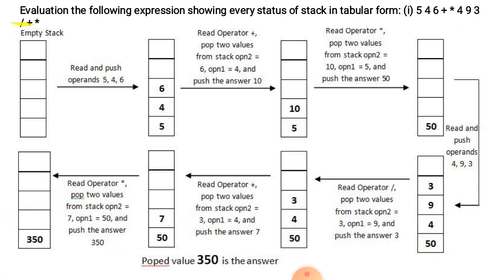Next operator is division. We read operator division and pop two values from the stack. Operand 2 is 3, operand 1 is 9. We perform the division operation: 9 divided by 3 is 3. The answer 3 is pushed onto the stack.